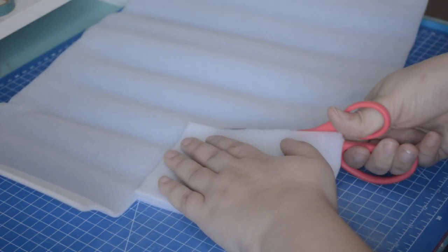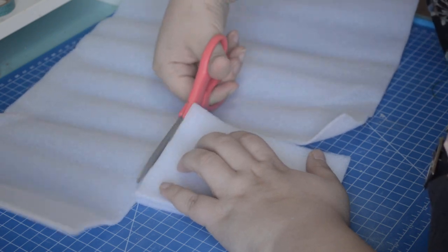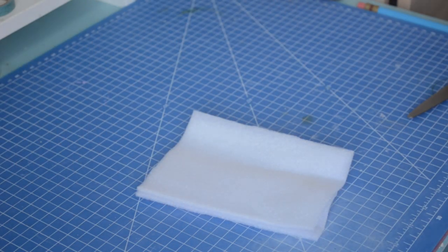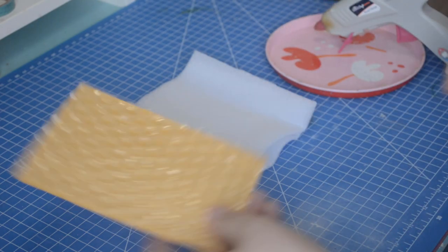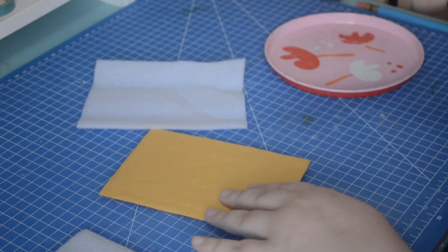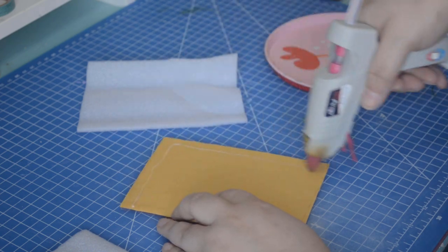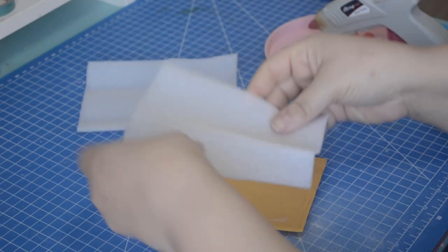A word of caution: my glue gun was so hot that it melted the foam, so use a low temperature one or a different glue. My glue gun has two temperature settings, and you can find it in the Village Tool Shed page on my website. I'll be sure to link it below.